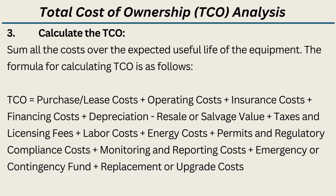Step 3: Calculate the TCO. Sum all the costs over the expected useful life of the equipment. The formula for calculating TCO is as follows: TCO = Purchase and lease costs + Operating costs + Insurance costs + Financing costs + Depreciation/Resale or salvage value + Taxes and licensing fees + Labor costs + Energy costs + Permits and regulatory compliance costs + Monitoring and reporting costs + Emergency or contingency fund + Replacement or upgrade costs.